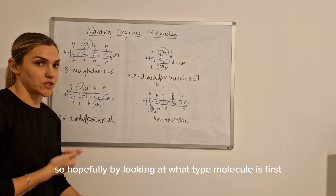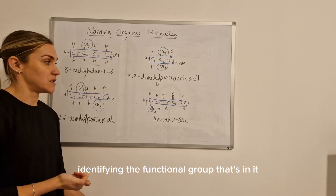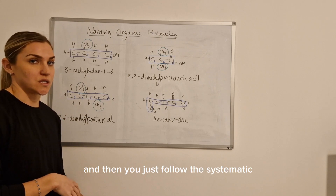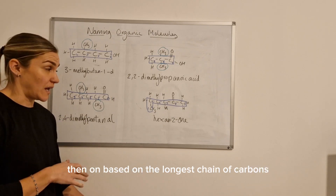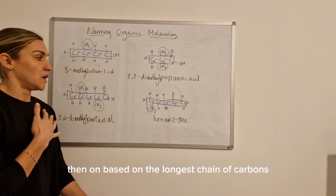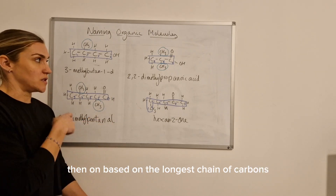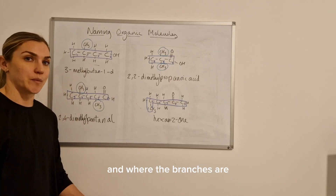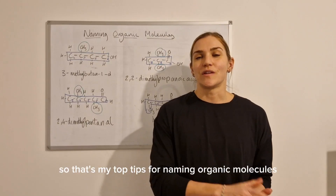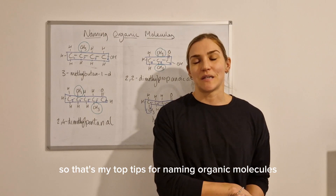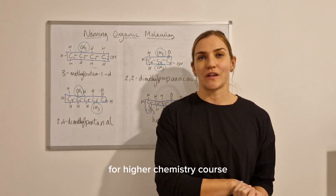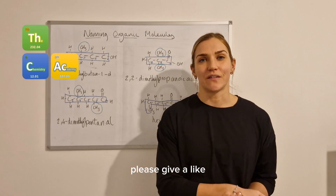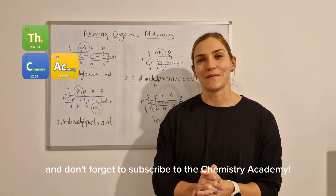Hopefully by first looking at what type of molecule it is — identifying the functional group — that gives you the name ending, and then you just follow the systematic naming rules from there based on the longest chain of carbons, how many branches there are, and where the branches are. Those are my top tips for naming organic molecules for the Higher Chemistry course. If you find this video useful please give it a like and don't forget to subscribe to the Chemistry Academy.